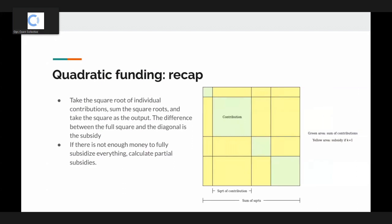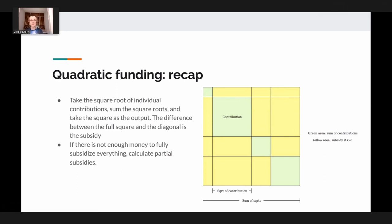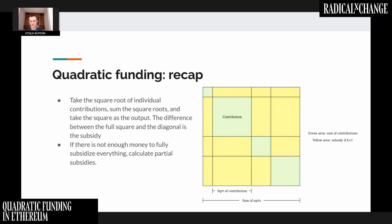So just to start off, I wanted to give a quick recap of what quadratic funding is. Quadratic funding is a mechanism that was introduced by myself and Glen in the paper on Liberal Radicalism a couple of years ago. The purpose of the mechanism is basically to allocate funding toward public goods — any kind of project that's valuable to large groups of people where you can't control who gets to use it.